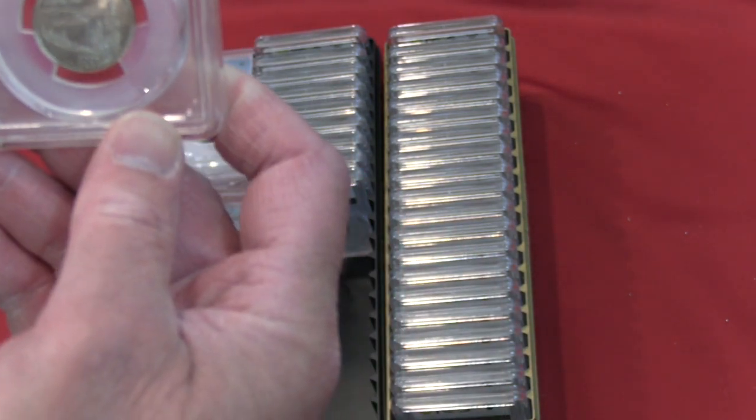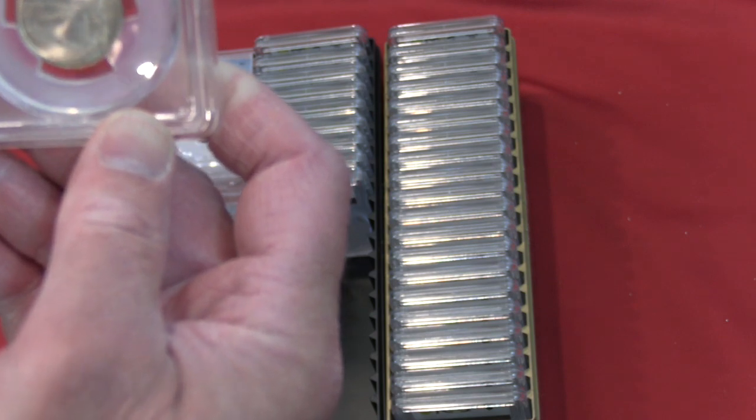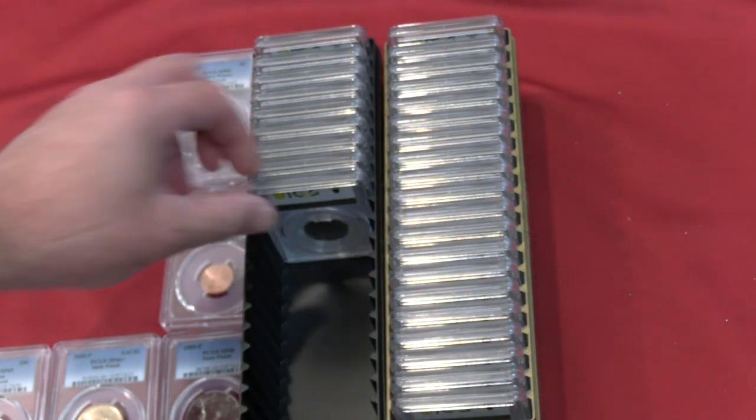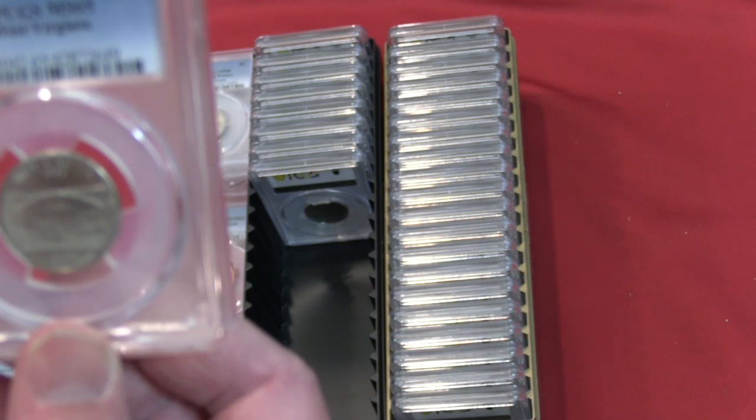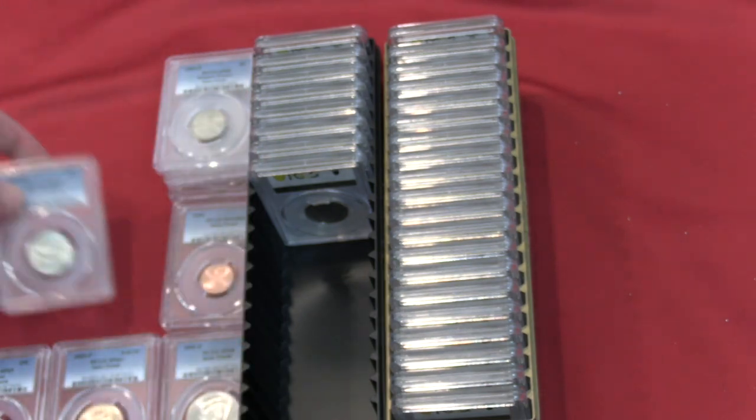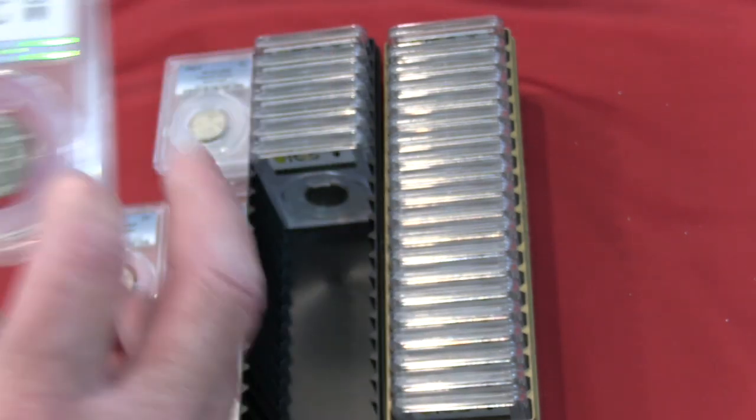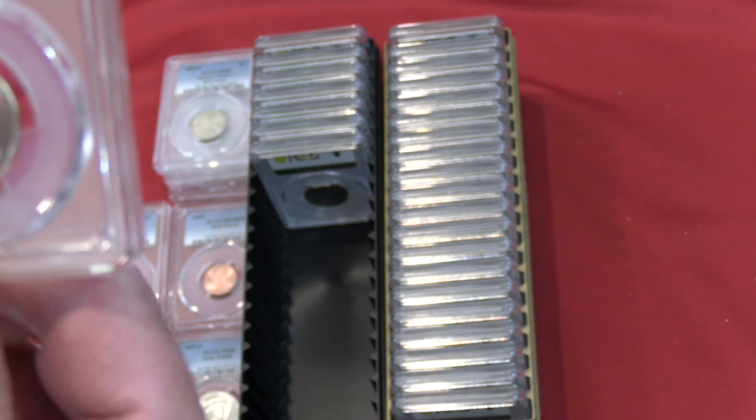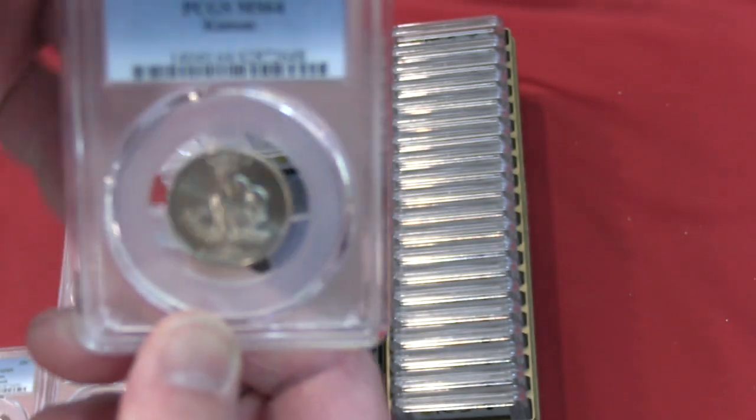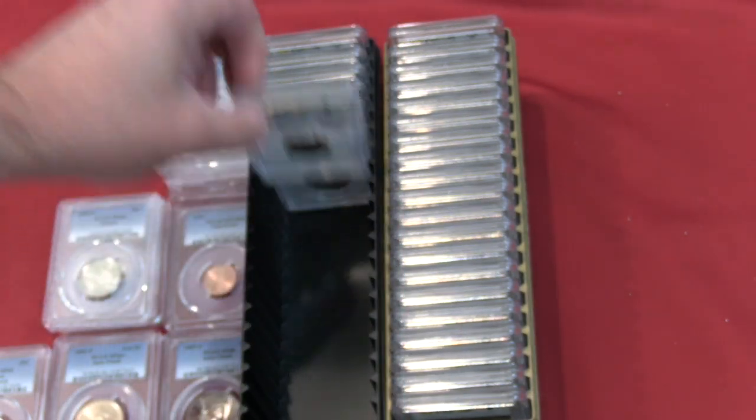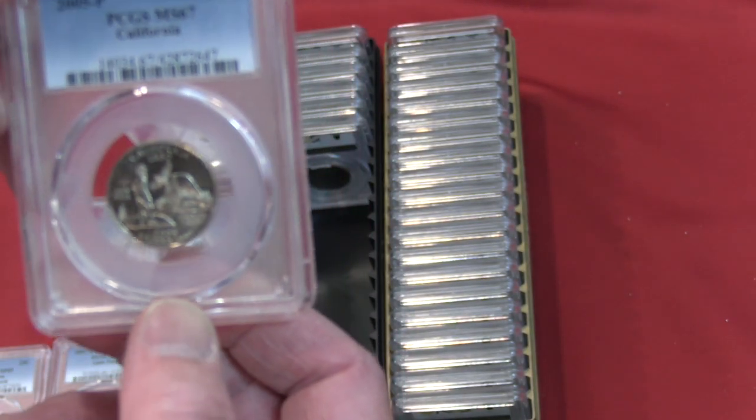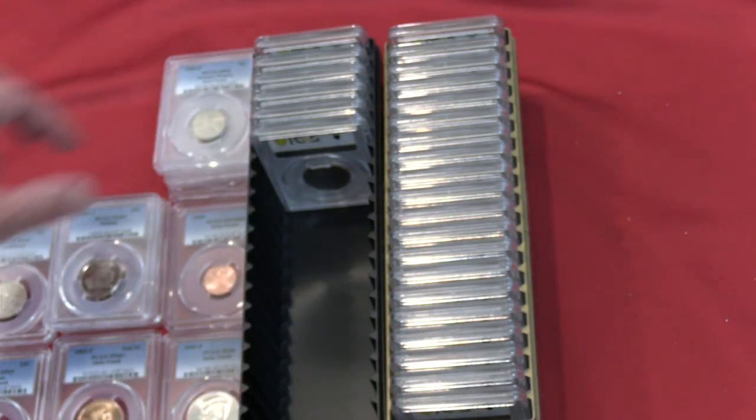Quarter 2005 SP-69 Oregon satin finish. Holy cow. 2005 West Virginia MS-65. 2005 P Kansas MS-64. 2005 P MS-67 California. Have to check that one.